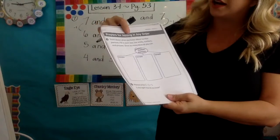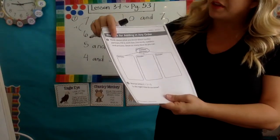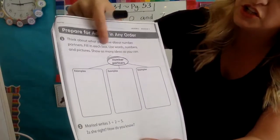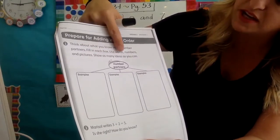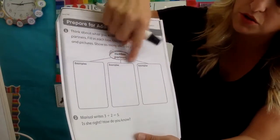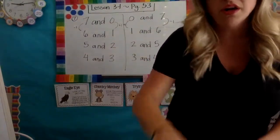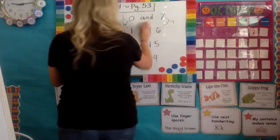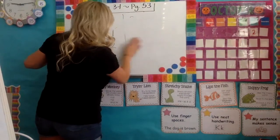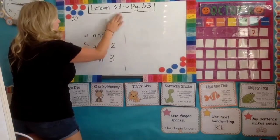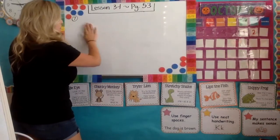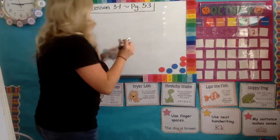You're going to turn the page and do 'prepare for adding in any order.' Number one says: think about what you know about number partners — fill in each box using words, numbers, and pictures, and show as many ideas as you can. It gives you number partners and then one, two, three examples. Go ahead and get started on that while I erase my board.